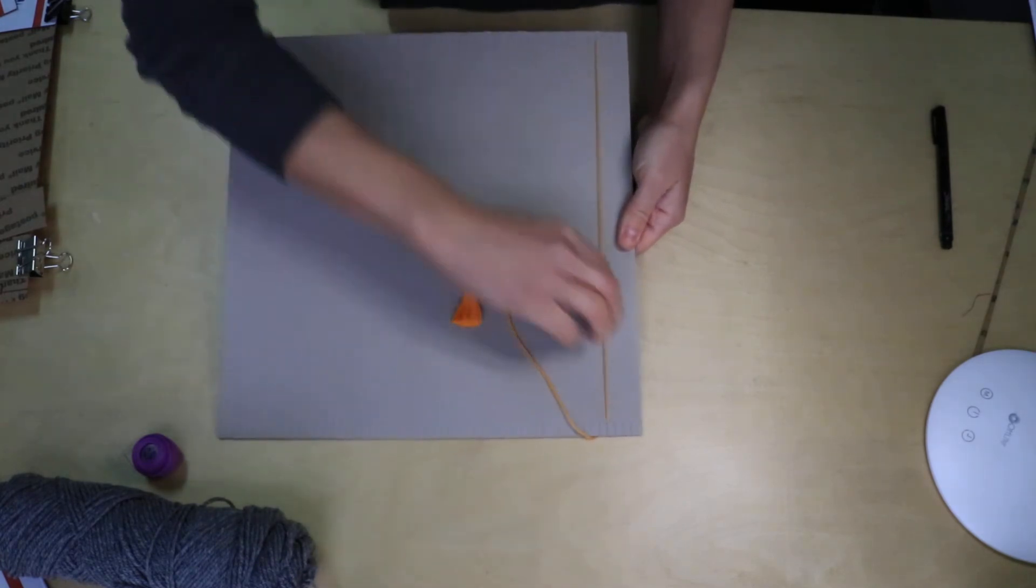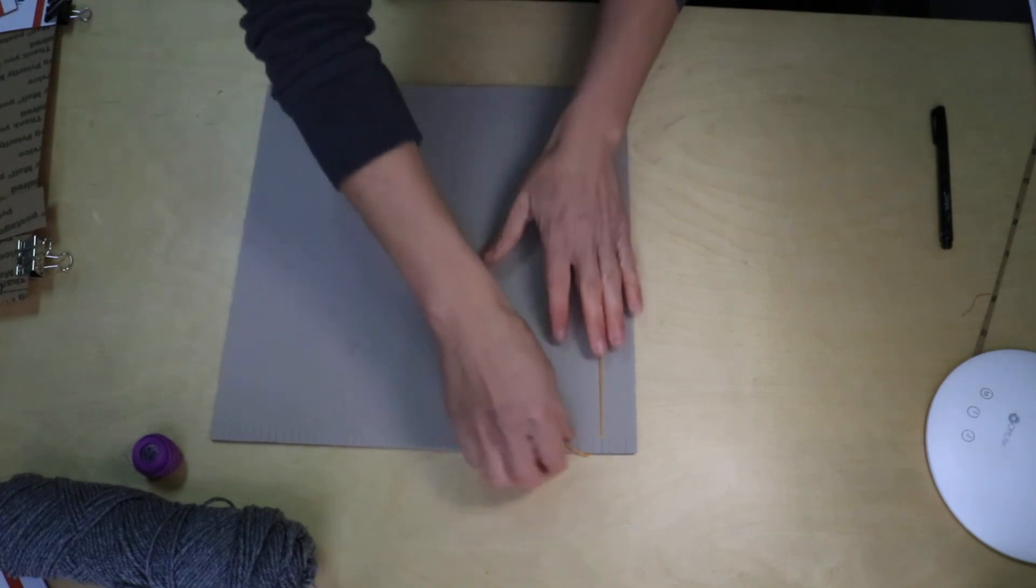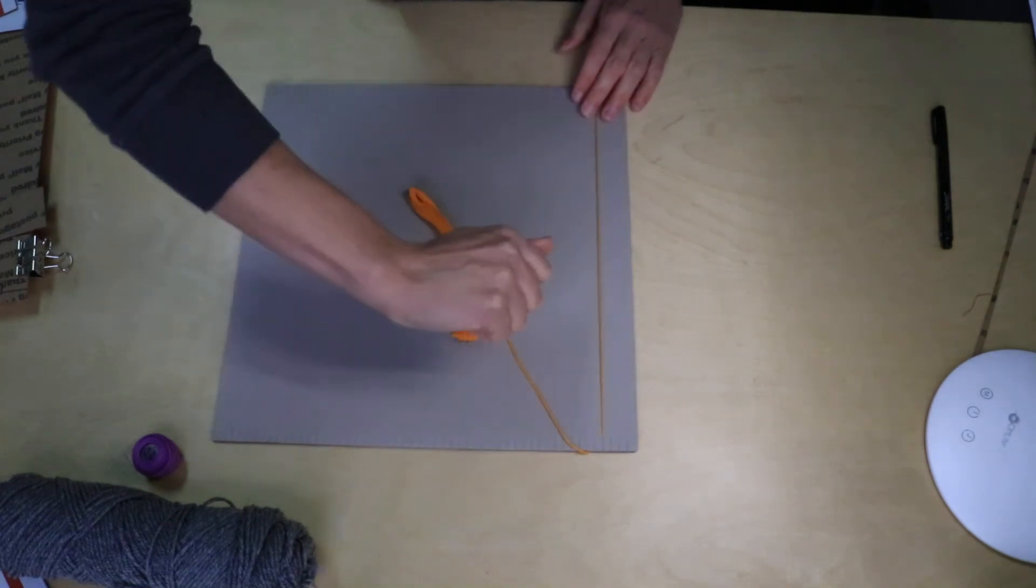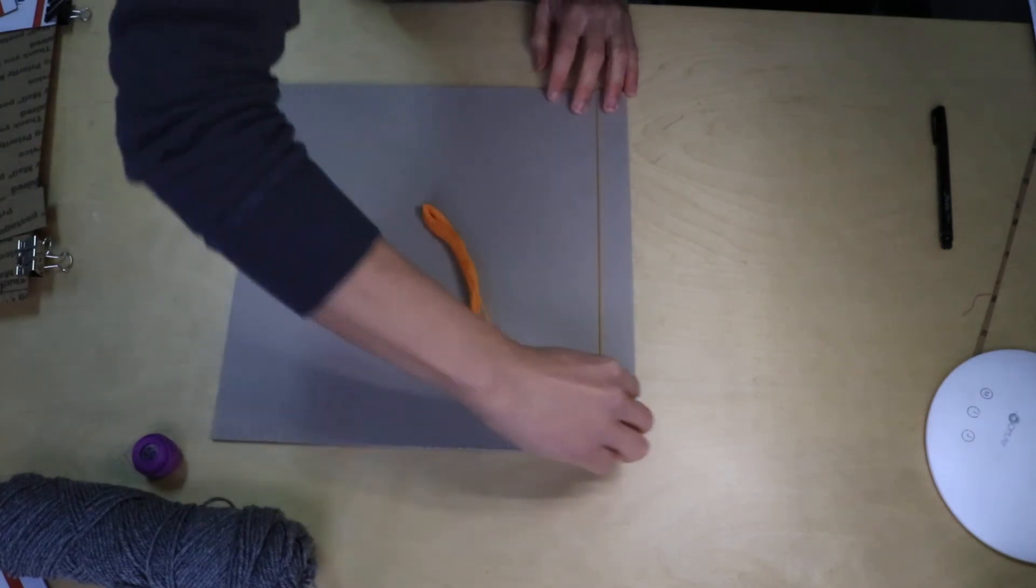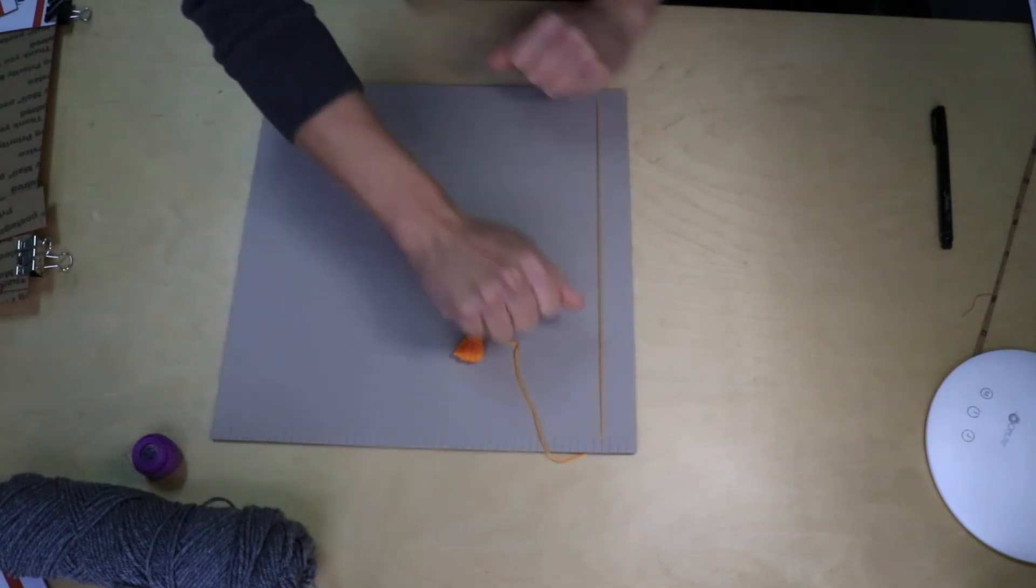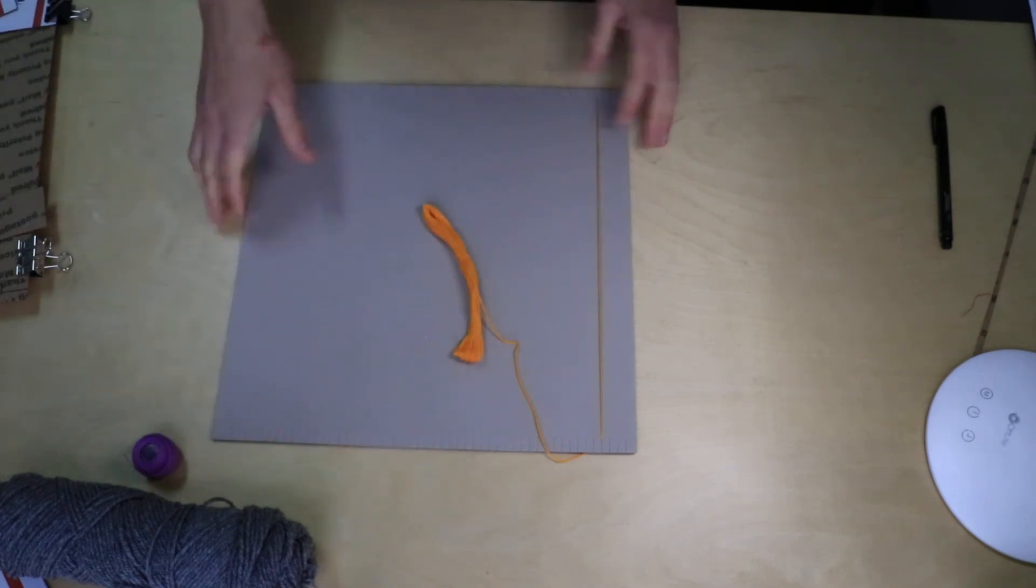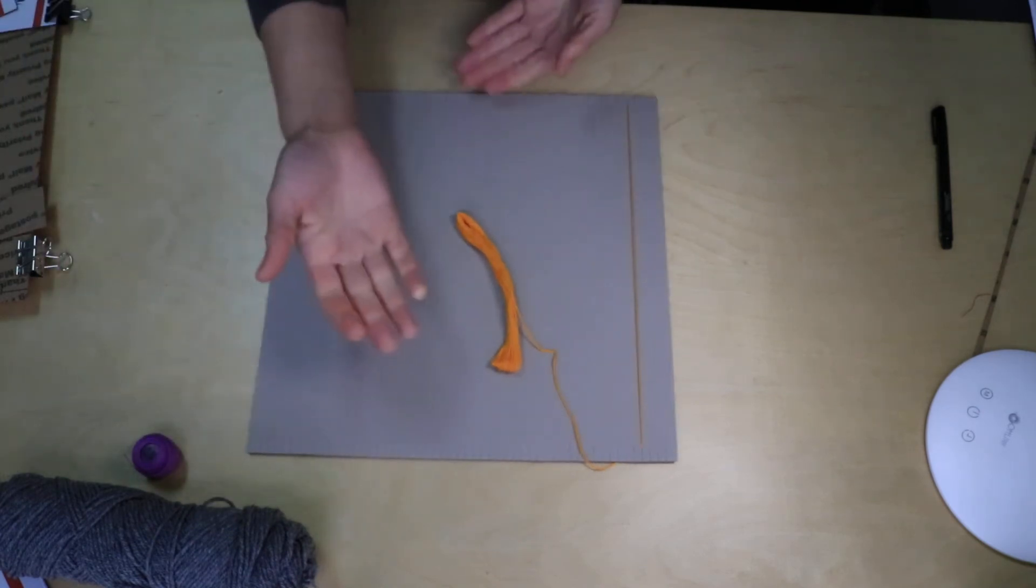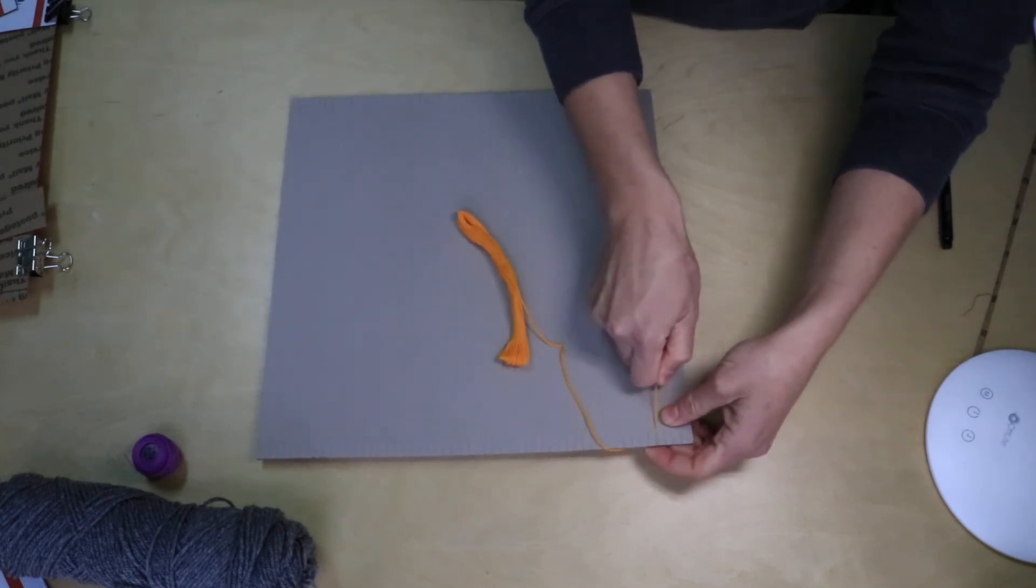Now before I really get rocking and rolling, I should mention about tension. It's really easy to try to yank these threads into place. I don't want to do that because if I have this strung way too tightly all the way across, it's going to make my loom, such as it is, bow, and that's not good. It'll cause some problems later on.